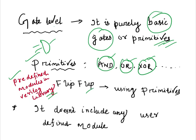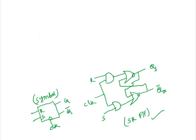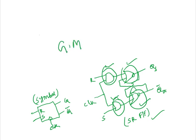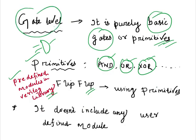For example, if you want to write Verilog code for a flip-flop, consider this SR flip-flop circuit. It includes two AND gates and two NOR gates. If you write the Verilog code for this SR flip-flop using only these primitives — two AND gates and two NOR gates — then this technique is called gate-level modeling. Gate-level modeling does not include any user-defined module.